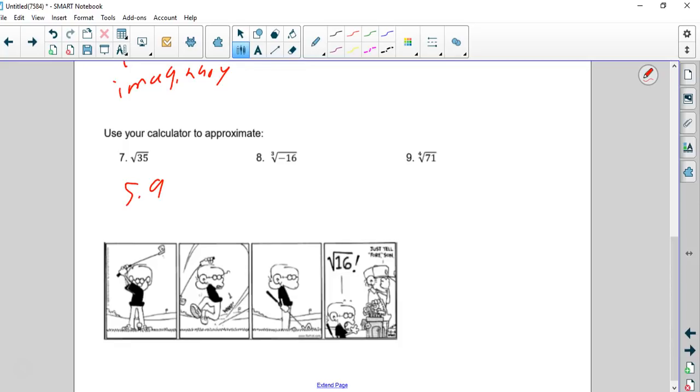The third root of negative 16. So we can take this third root. You hit the number 3, then you hit the math key, and you go down to number 5, which is a radical sign with an x in front of it. And then you hit negative key, the gray negative key, 16. And you get approximately negative 2.5.